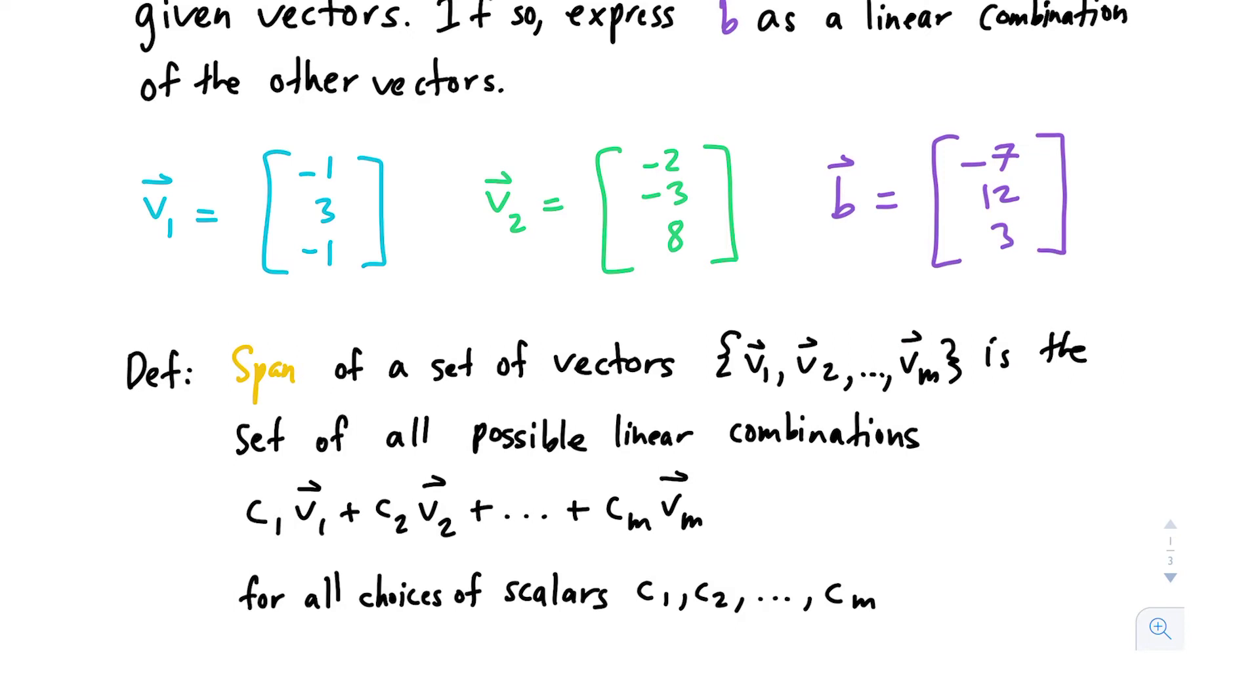So what we're basically saying here is, is there some scalar that we can multiply v1 by? We'd be multiplying some scalar c1 times v1, and then adding that to some scalar c2 that's multiplied by v2 in order to result in b. That's what we're asking, and let's go through that step-by-step process.